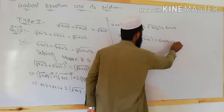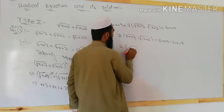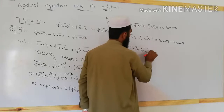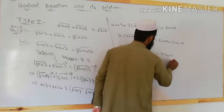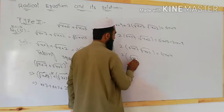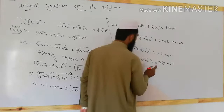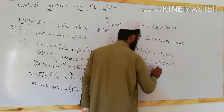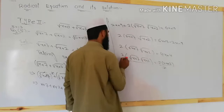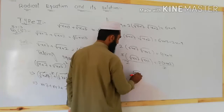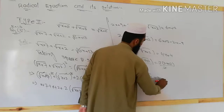Shifting 2x + 9 to the right side: 2√((x+7)(x+2)) = 6x + 13 − 2x − 9 = 4x + 4. Taking 2 common from the right side: 2√((x+7)(x+2)) = 2(2x + 2). Dividing both sides by 2: √((x+7)(x+2)) = 2x + 2.